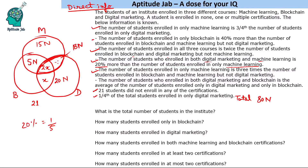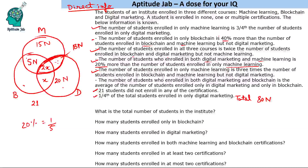The number of students enrolled in only Blockchain is 40 percent more than the number enrolled in Blockchain and Machine Learning but not Digital Marketing, which is 5n. Forty percent is 2/5, so only Blockchain becomes 7n. Notice how easy these calculations are compared to using fractional variables like n/4 or n/12.